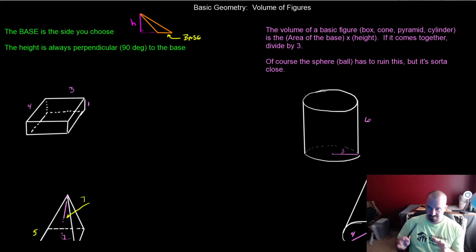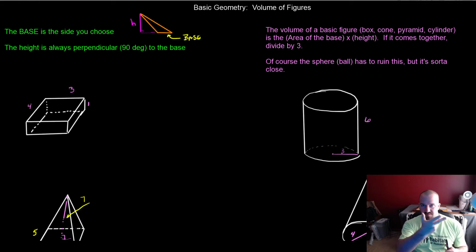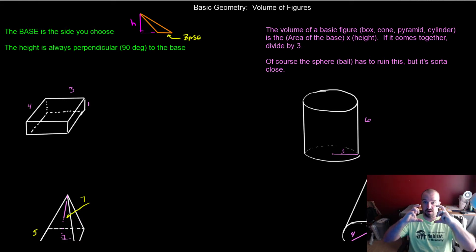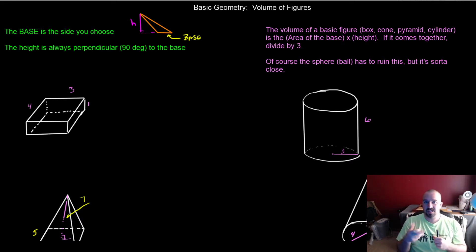A couple of easy rules for the basic figures: the volume of one of these basic figures is always the area of the base — whatever that happens to be. If it's a square or a rectangle, it's length times width. If it's a circle, then you've got pi r squared. But it's always the area of the base times the height.